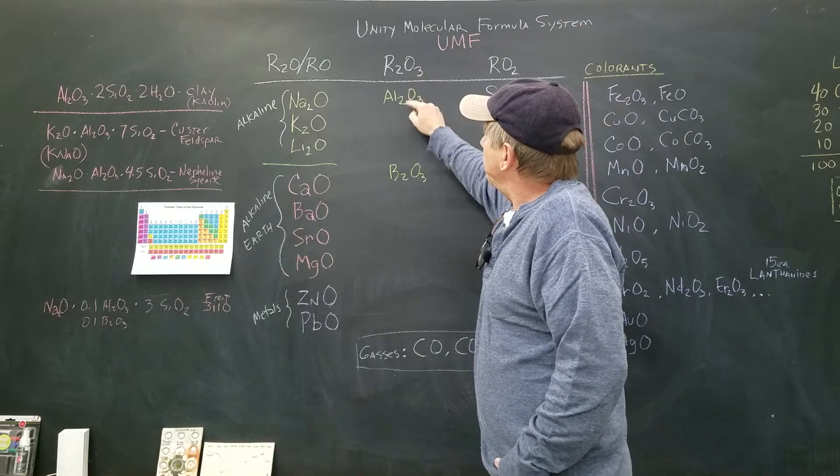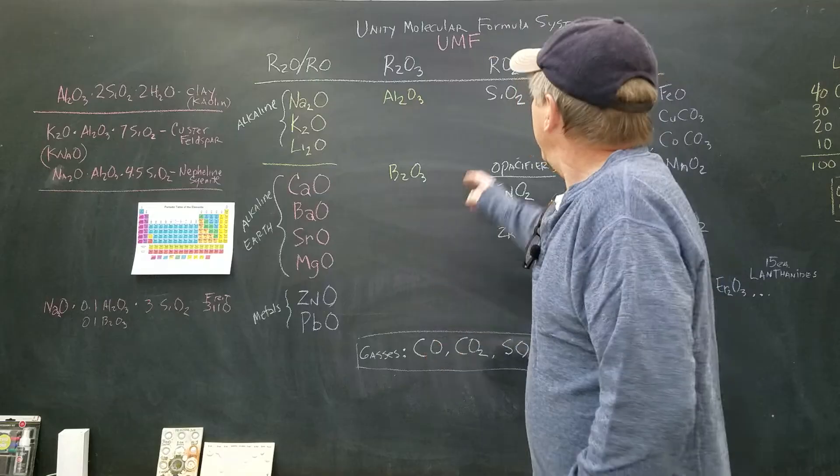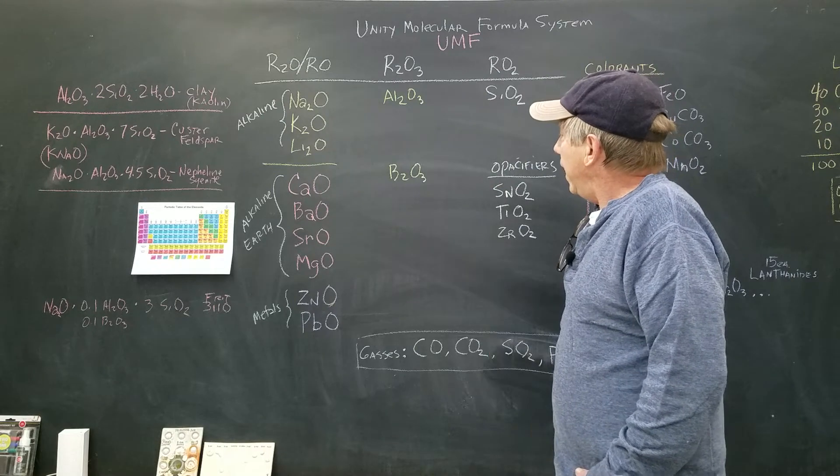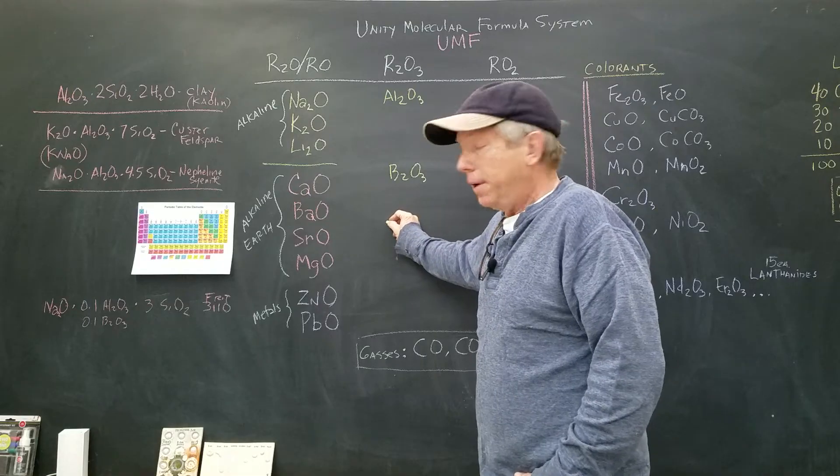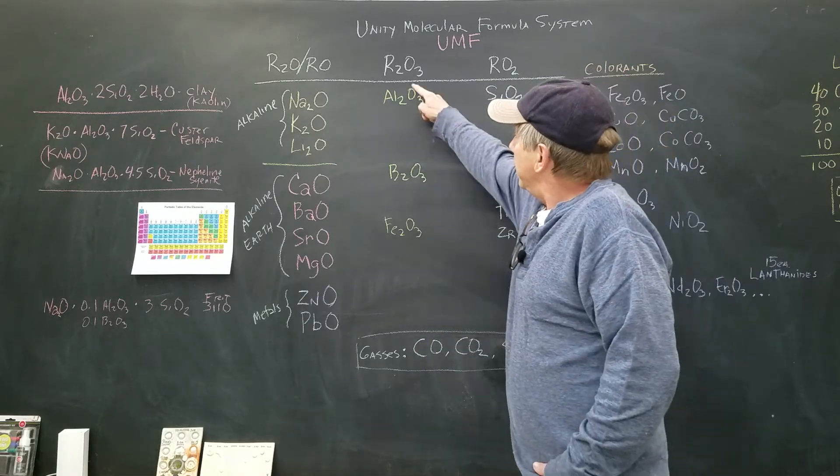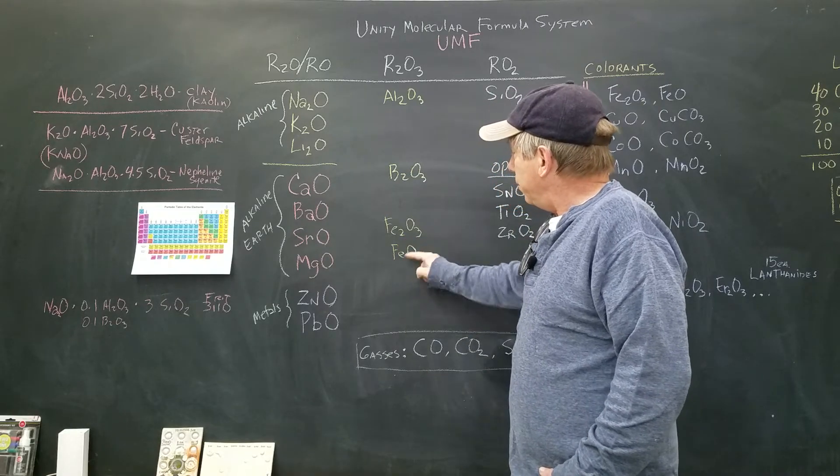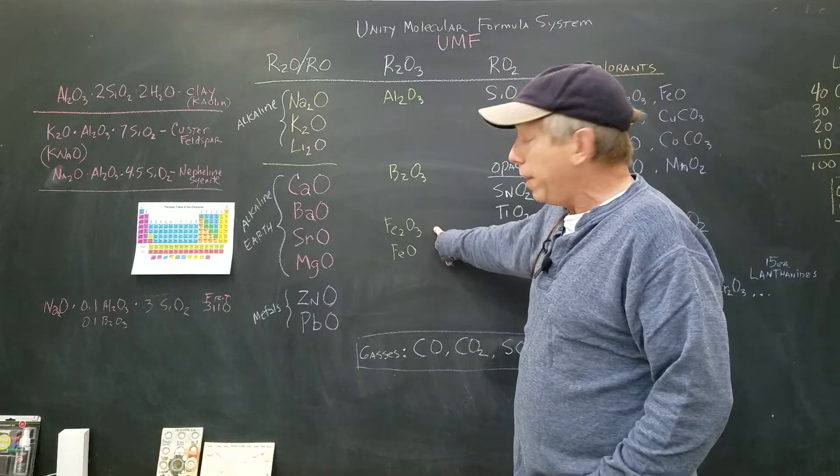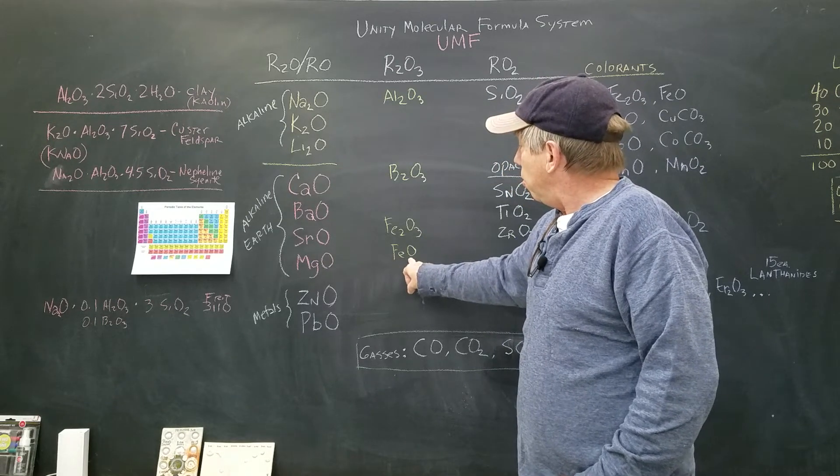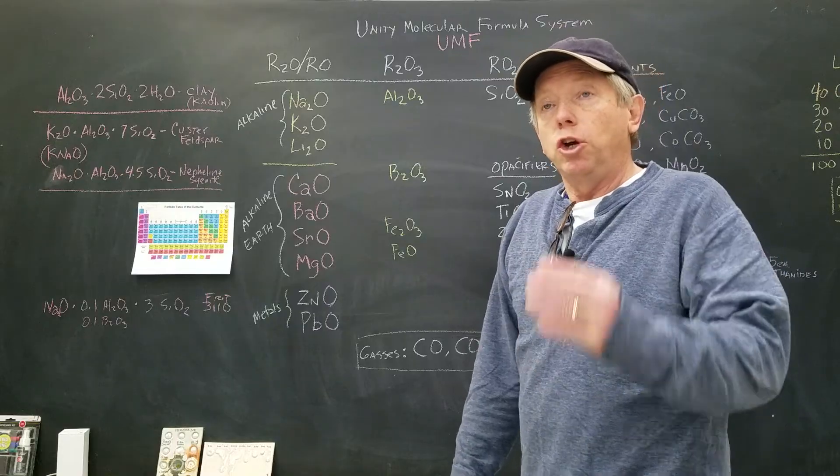This column is the R2O3—for instance Al2O3. Anytime I see that structure, I'm going to think that it's a refractory. And the glass former is RO2, so that's SiO2. For instance, if I put up iron Fe2O3, is that a flux, a refractory, or a glass former? It's clearly in the refractory column—Fe2O3. But now if I put it into reduction, I can reduce it down to FeO. So that's black iron, this is red iron. If I reduce it, it turns into FeO, which is then a flux—RO. That's the way we can predict what the materials will do.